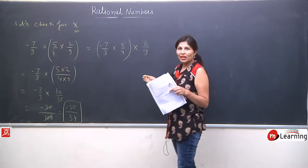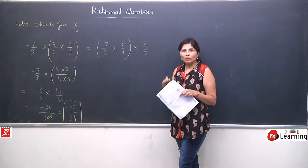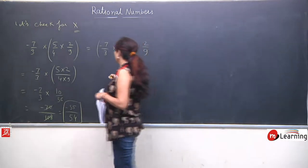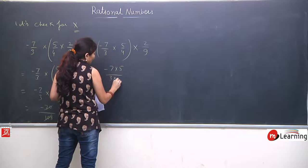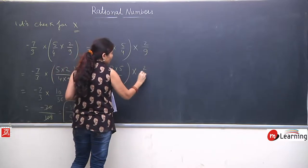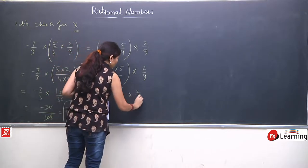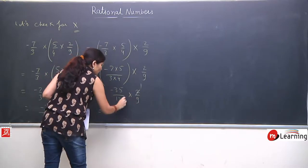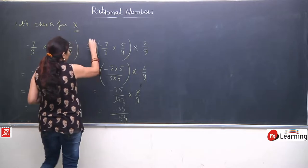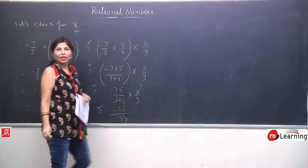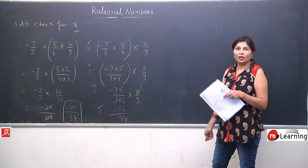Ab hum right hand side solve karenge. Bracket priority yahan hai — first two terms: minus 7 by 3 × 5 upon 4 = minus 35 upon 12. Then minus 35 upon 12 multiply by 2 upon 9 — cancel 2 and 12: 2 ones are 2, 2 sixes are 12. Your answer is minus 35 upon 54. LHS equals to RHS — multiplication is associative.